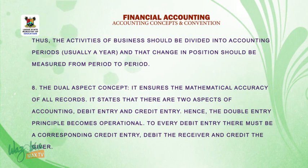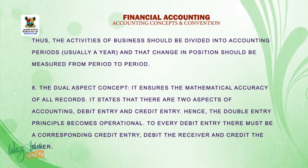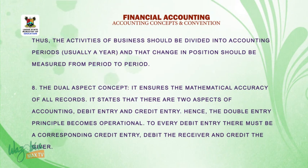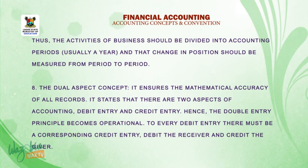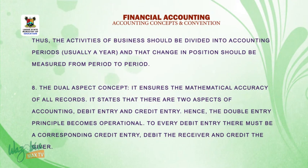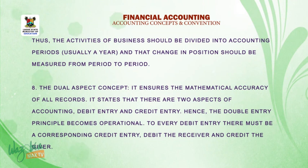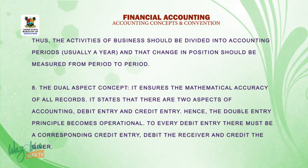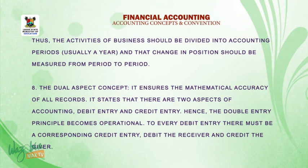The dual aspect concept. It ensures the mathematical accuracy of all records. It states that there are two aspects of accounting: debit entry and credit entry. Hence, the double entry principle becomes operational. To every debit entry, there must be a corresponding credit entry. Debit the receiver and credit the giver.